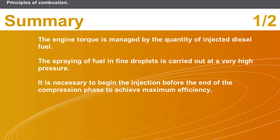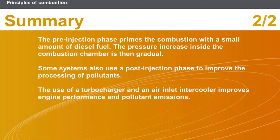In this section we covered the following points. The engine torque is managed by the quantity of injected diesel fuel. The spraying of fuel in fine droplets is carried out at very high pressure. It is necessary to begin the injection before the end of the compression phase to achieve maximum efficiency. The pre-injection phase primes the combustion with a small amount of diesel fuel, making the pressure increase gradual. Some systems also use a post-injection phase to improve the processing of pollutants. The use of a turbocharger and an air inlet intercooler improves engine performance and pollutant emissions.